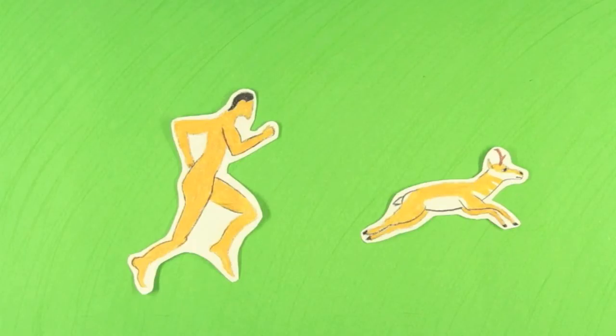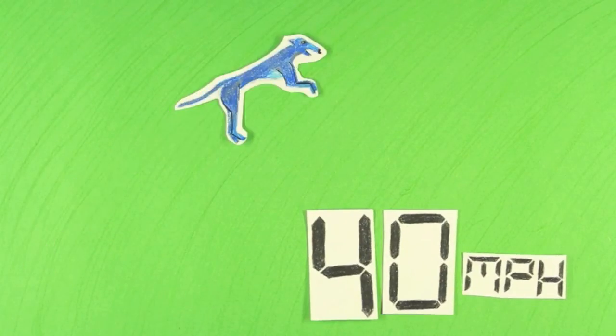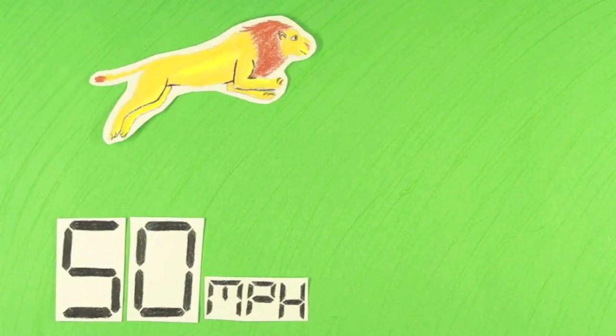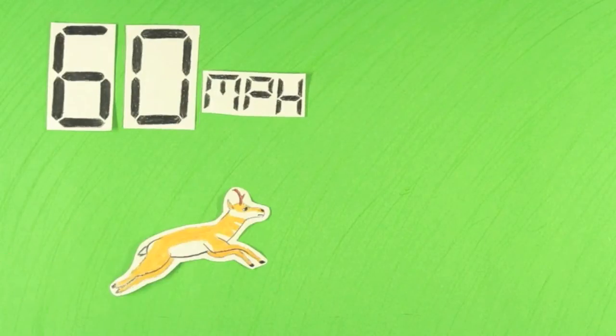However, we aren't even close to being the fastest animal. Certain dogs can run up to 40 miles per hour. Lions can reach up to 50 miles per hour. Antelope, 60 miles per hour.